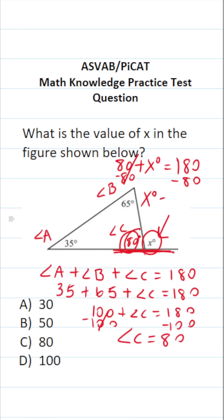this says x equals 180 minus 80 is 100. So the measure of angle x, as you can see, is 100. So the answer to this one is D.